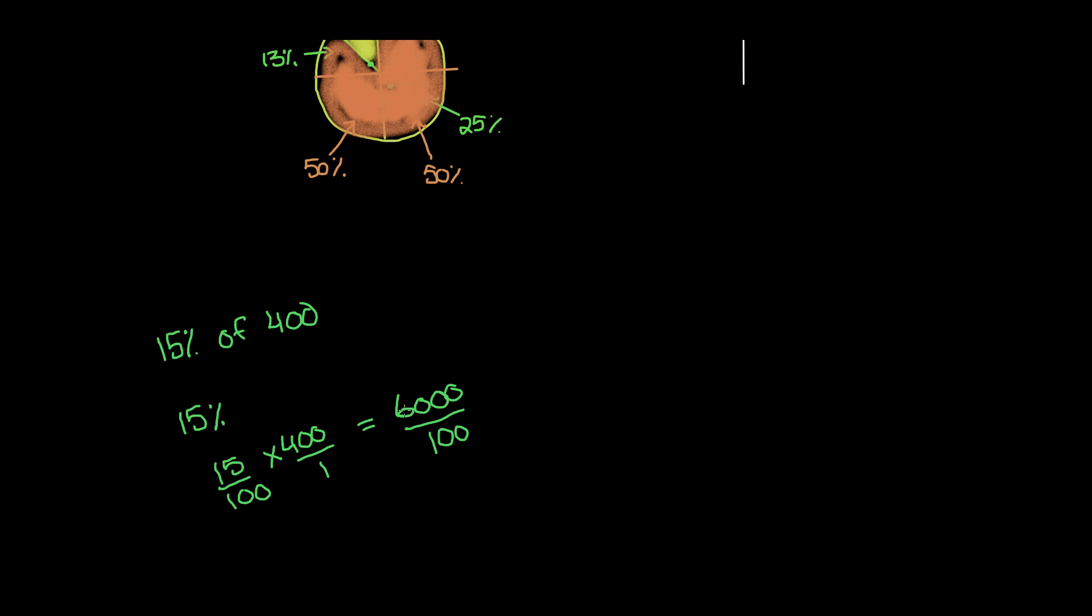So now we're dividing 6,000 by 100. We cut out the two zeros from both of these numbers, so we get 60 divided by 1, which is 60. So 15% of 400 is 60.